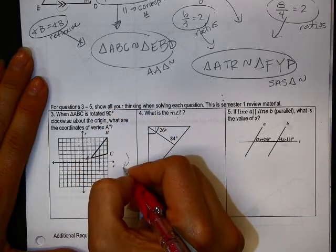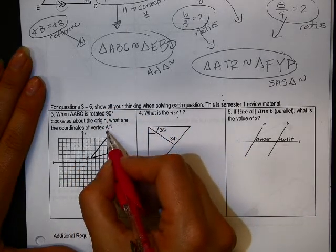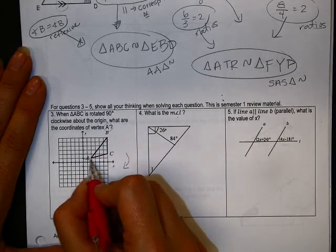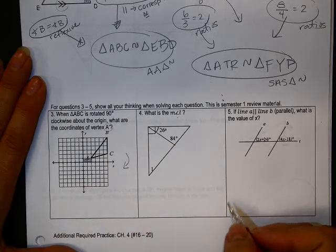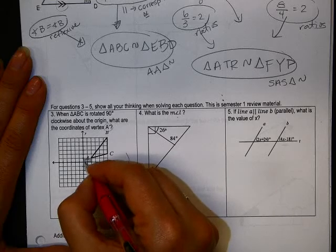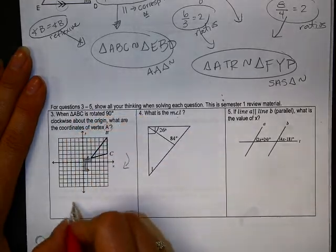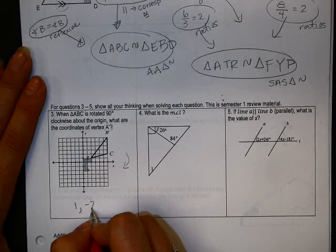Alright, clockwise, this direction. We're trying to figure out where A is going to be. This is our little rectangle that gets rotated. This is what it looks like when it rotates that. So this point here would be 1, negative 2.